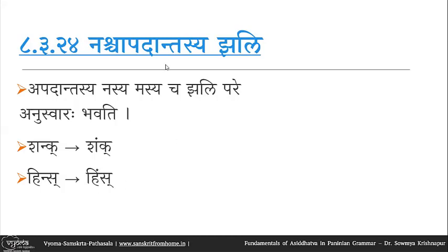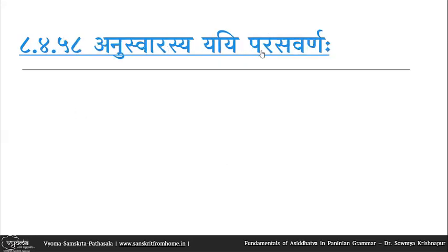After this anuswara conversion, there is the possibility of parasavarana. The anuswara gets converted into nakara — as in shankate, where we have nakara. But that is handled separately. In vandhi, the nakara from numagama is converted to anuswara, and then everywhere nakara followed by jhal is converted to anuswara. Then, as we have anuswarasya yai parasavarana.